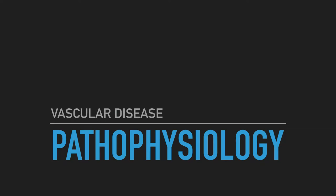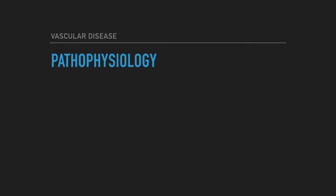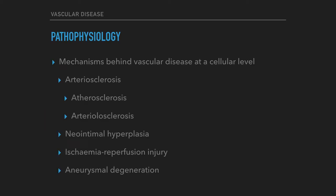The pathophysiology of vascular disease. Vascular pathobiology or vascular pathophysiology is the study of the mechanisms behind vascular disease at a cellular level, which is dominated by atherosclerosis. This overview will address arteriosclerosis, including atherosclerosis and arteriolosclerosis, as well as neointimal hyperplasia, ischemia reperfusion injury, and aneurysmal degeneration.